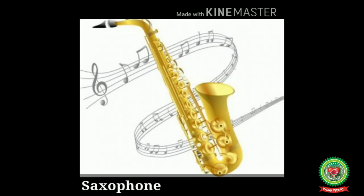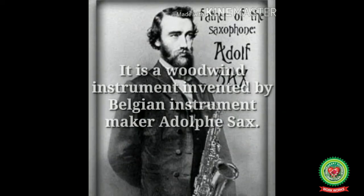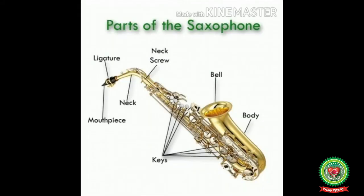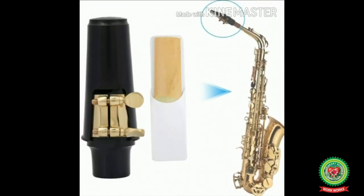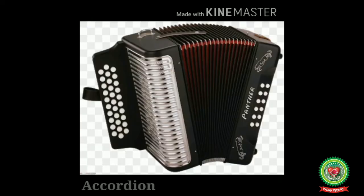Next one is saxophone. The saxophone is a woodwind instrument invented by Belgian instrument maker Adolf Sax. It has seven main keys including the octave key. It is not a true brass instrument because it has a reed. A reed is a piece of dry bamboo which vibrates and produces sound when air blows through the mouthpiece.